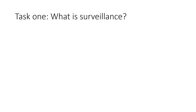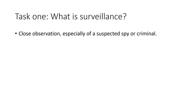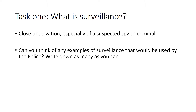Task one — what is Surveillance? Surveillance is actually a close observation especially of a suspected spy or criminal, so it's about watching closely a suspected spy or criminal. To start with, can you think of any examples of surveillance that would be used by the police and try and write down as many as you can? Think about the pictures that were on the first slide and what we just discussed.